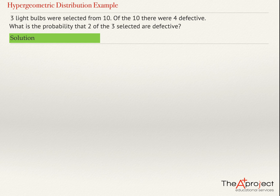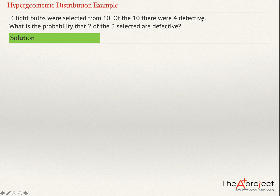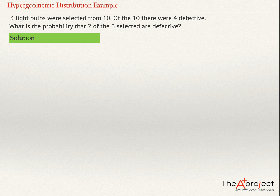But not only this. From the whole population, there is a number of successes — in this case, successes means defective. So there are a number of defectives, and I want to check the probability that, mostly in the sample of 3, there will be a number of successes. If the question is like this, I'm recognizing immediately that this needs to be a hypergeometric distribution.